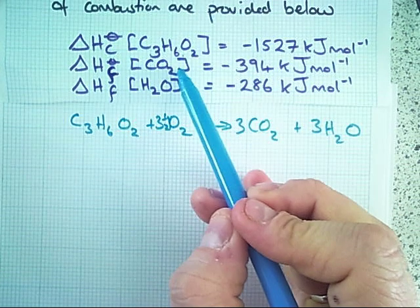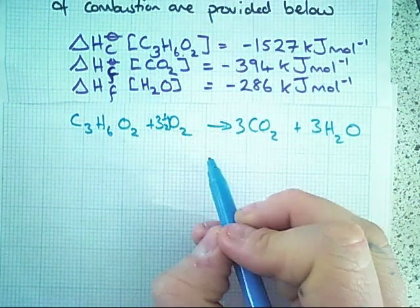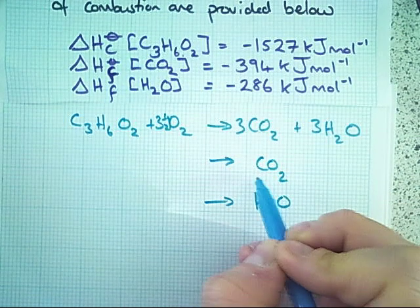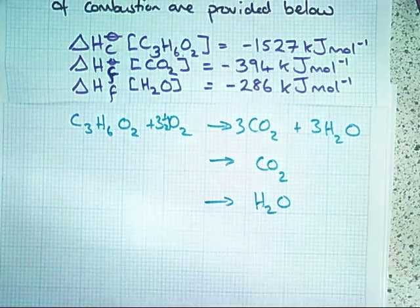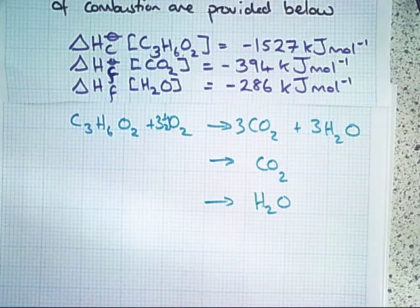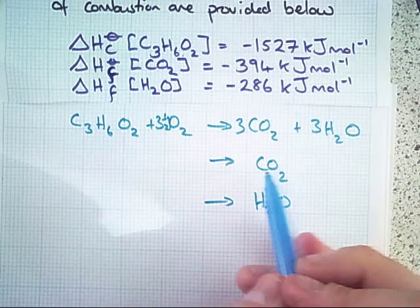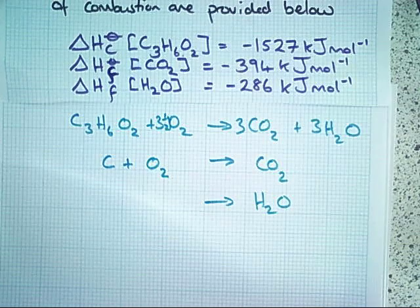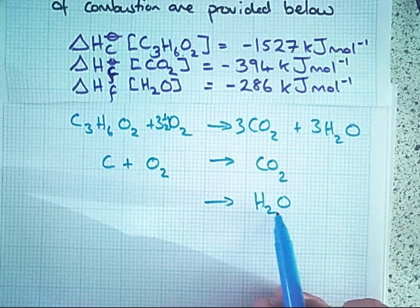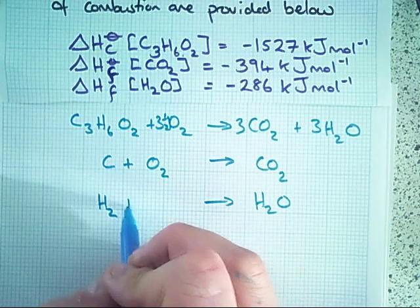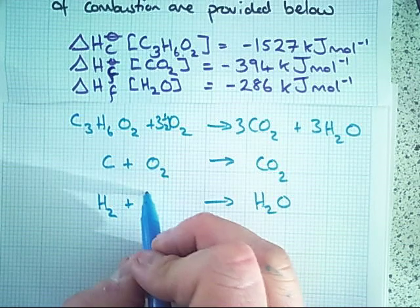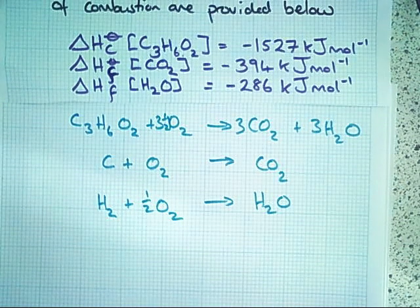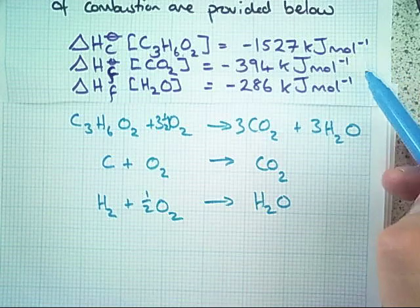We're next given the enthalpy change of formation of carbon dioxide and of water. The definition of enthalpy change of formation is the enthalpy change when one mole of a compound is completely formed from its elements in their standard state. So carbon dioxide is formed from carbon and one diatomic oxygen, and water vapor is produced from one mole of diatomic hydrogen and half a mole of diatomic oxygen.